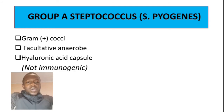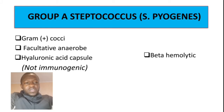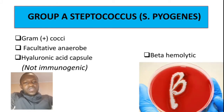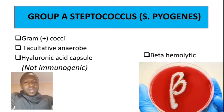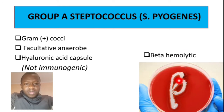The other thing you need to know is that in culture, Group A Streptococcus is beta-hemolytic, meaning it causes complete hemolysis, showing a clear zone around the colonies.